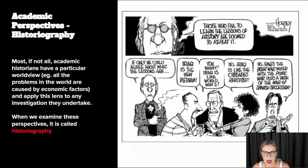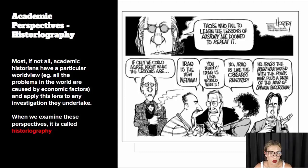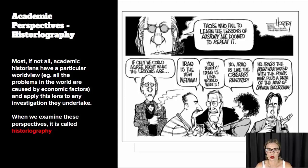Most, if not all, academic historians have a particular world view. They might, for example, believe that all the problems in the world are caused by economic factors, or that all the problems in the world are because of a class struggle — you would call that a Marxist historian. What they do is bring that world view to the study of history and apply that lens to any investigation they undertake. They might claim to be objective, but it's impossible to divorce this world view from our interpretations of historical evidence. It's important to remember that all historians bring their world view to their work. When we examine the perspectives that they bring, we call this historiography.